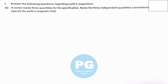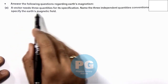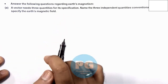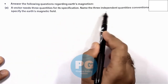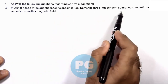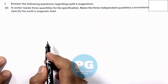Dear students, in this exercise we are given with six parts A to F. One by one I'll explain all the parts. Let's concentrate first on part A, where it is saying a vector needs three quantities for its specifications. Name the three independent quantities conventionally used to specify the earth's magnetic field.